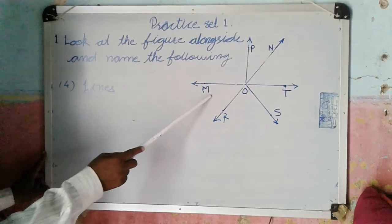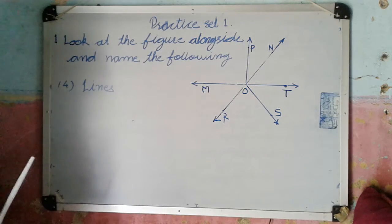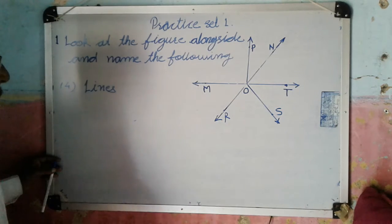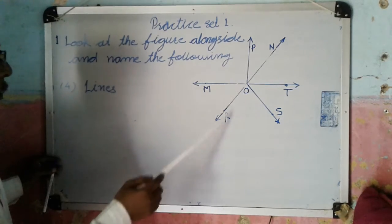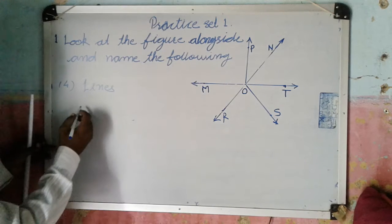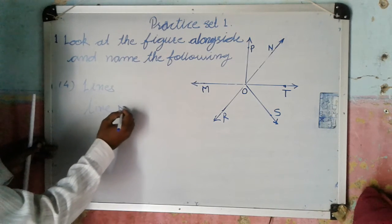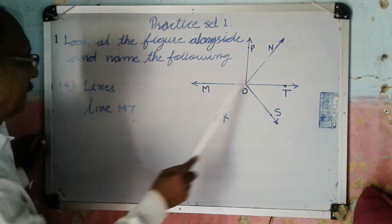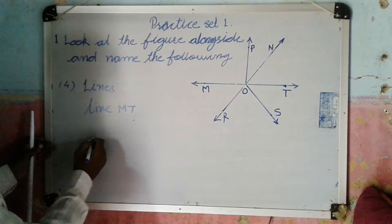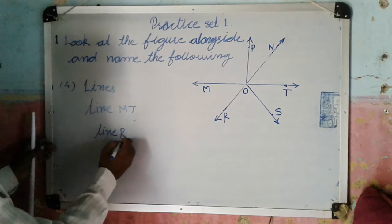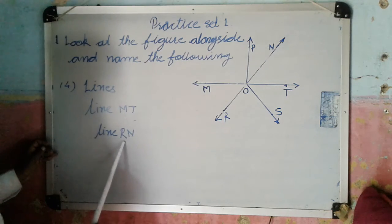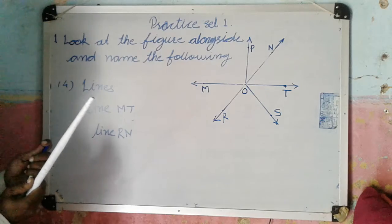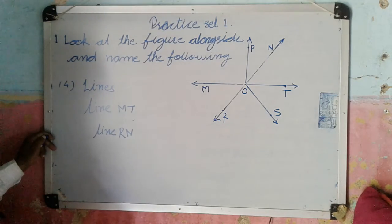Lines. Now we have to write names of lines of this figure. So in this figure, how many lines are there? Here line MT is one line, and line RN are two lines. So here line MT, or you can write the same name as line TM, and another line RN, or this can be named as line NR. In this way we can show here rays, line segments, lines, and points in this figure.